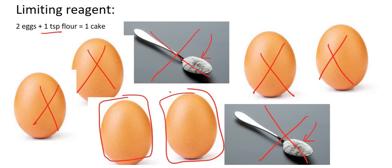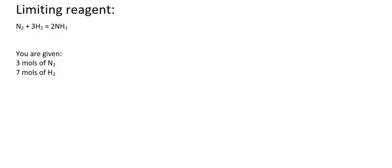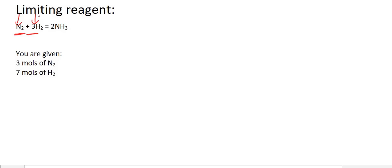So we're going to stop with the baking analogy now and return back to normal science. Can you remember in the previous lessons, whenever I gave you an equation, I always gave you one of the starting materials and said the other one was in excess? In this scenario — and this is how limiting reagent works — they give you both of the starting materials. They give you the nitrogen and they give you the hydrogen. In the previous ones I only gave you one of them, so you didn't have to worry about limiting reagent.